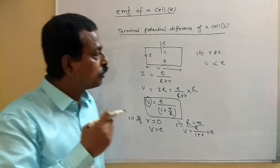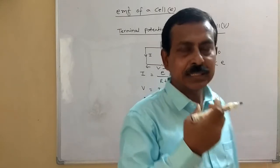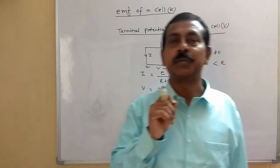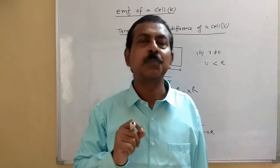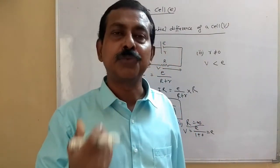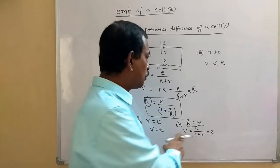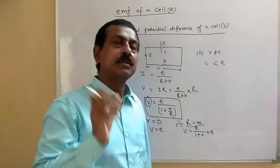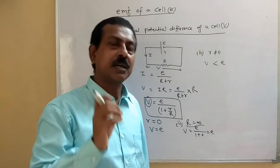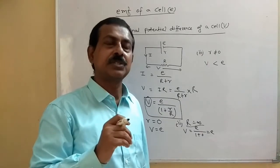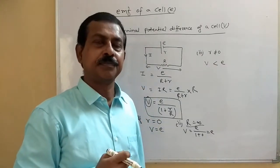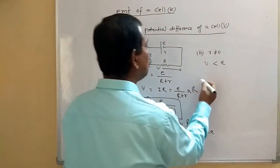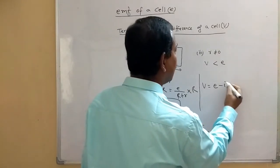One important point often asked in exams: can the terminal potential difference of a cell ever be greater than its EMF? If you look at the standard formula, it seems impossible. But it is possible in one case — when the cell is being charged. We can also write V as E minus I times r. Obviously if r is non-zero, V is less than E because we are subtracting I·r.